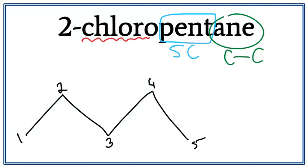We have a chloro attached to this pentane. This 2 here tells us that it is on the second carbon. Chloro means chlorine. We have a chlorine attached on the second carbon.